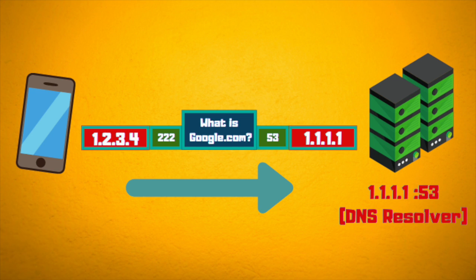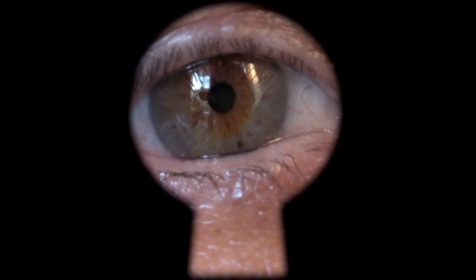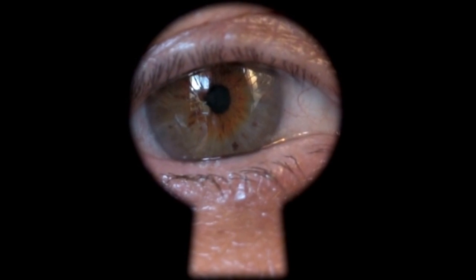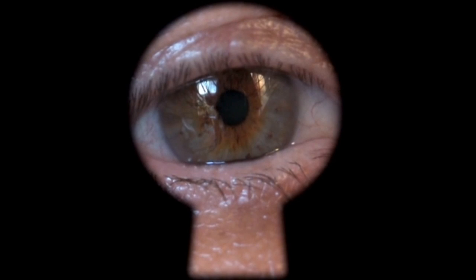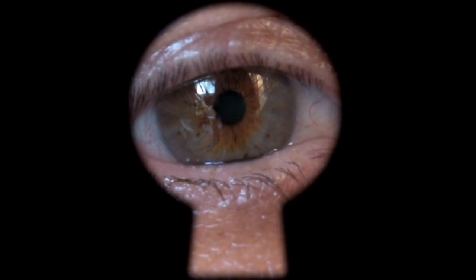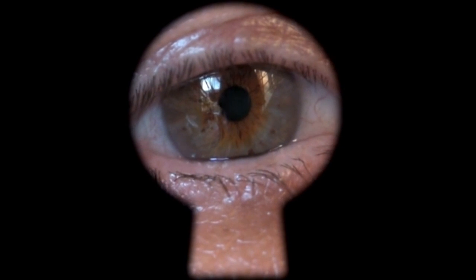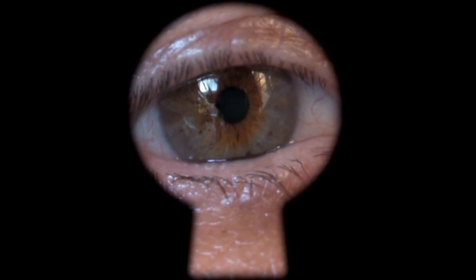However, the UDP packet is unencrypted and any in-route devices such as ISPs can see this query and know the websites that the client is visiting, which is bad.